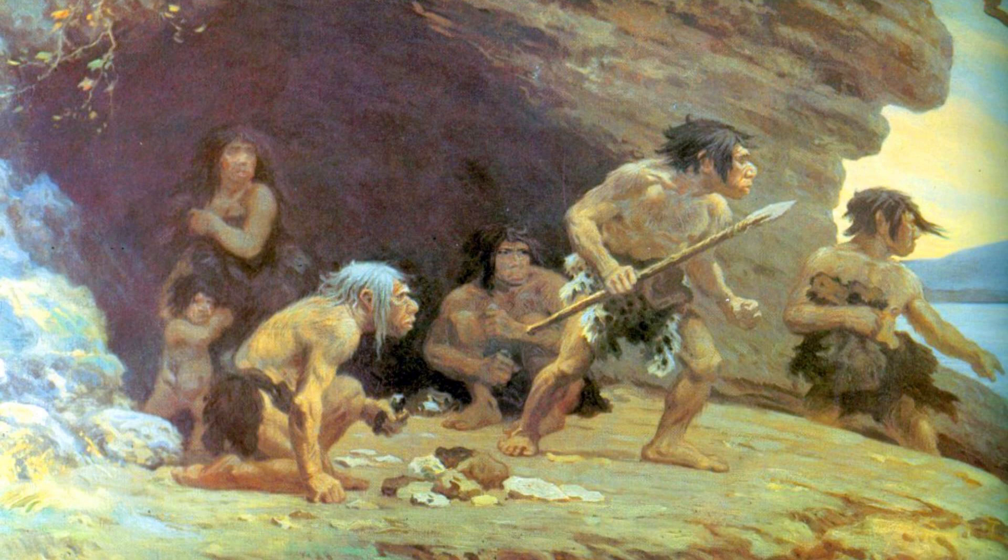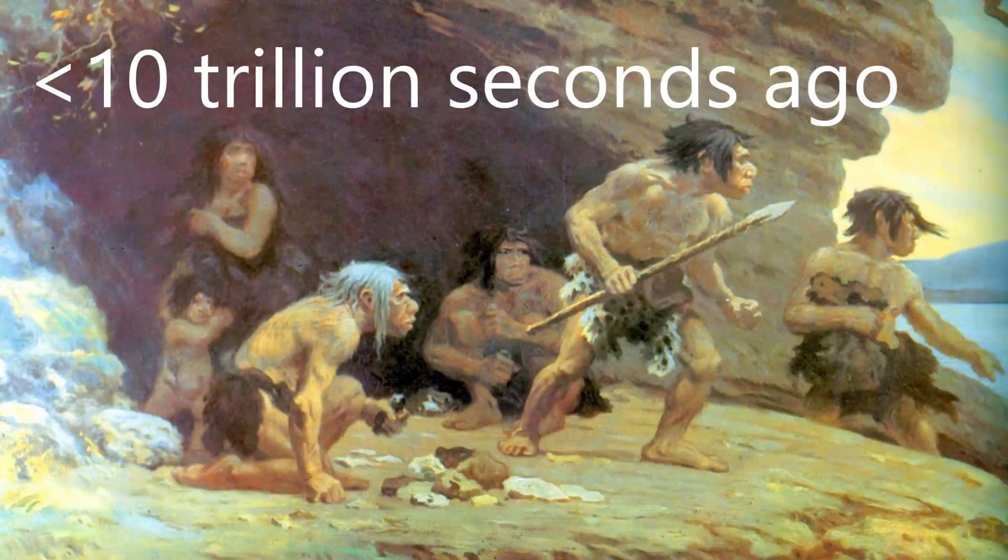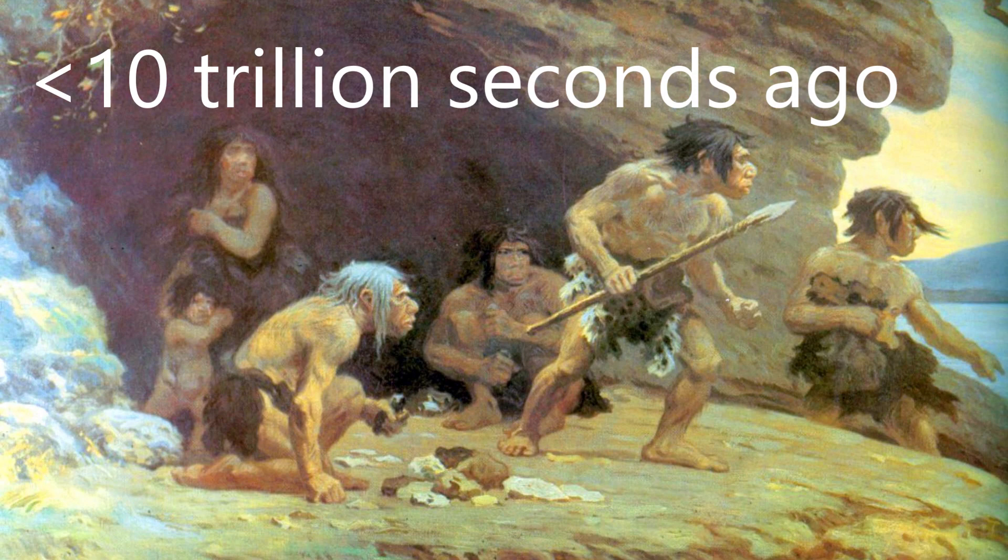And the species Homo sapiens are estimated to have been on Earth for about 300,000 years, and so haven't even been around for 10 trillion seconds, which is about 317,000 years.